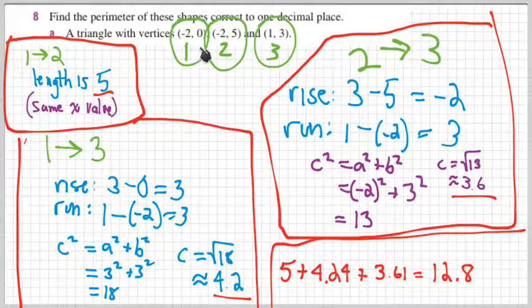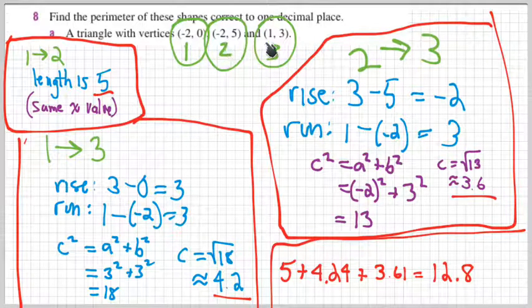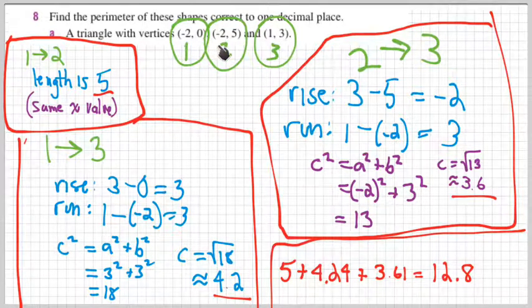There's these points: negative 2, 0; negative 2, 5; and 1, 3. I've called them points 1, 2, and 3.